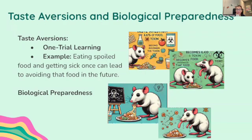Let's also look at taste aversions and biological preparedness. A taste aversion can be acquired after just one pairing of a specific food — the conditioned stimulus — and an unpleasant response like nausea, the unconditioned response. For example, if you ate spoiled food and got sick, you would tend to avoid that food in the future. Biological preparedness means animals, including humans, are biologically predisposed to learn certain associations — such as food-related aversions — more quickly than others, essentially for survival purposes. For instance, if a bear eats a berry that makes it sick, it learns very quickly not to eat that berry again.